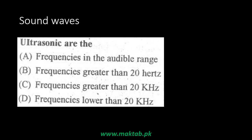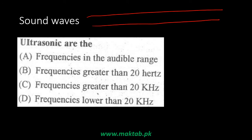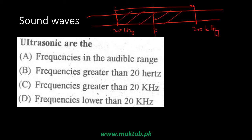Ultrasonic refers to frequencies above the audible range. The audible range is from 20 Hz to 20 kHz — the range in which people can hear sound. Above this range is called ultrasonic, because 'ultra' means above. Below the audible range is called infrasonic, because 'infra' means below.